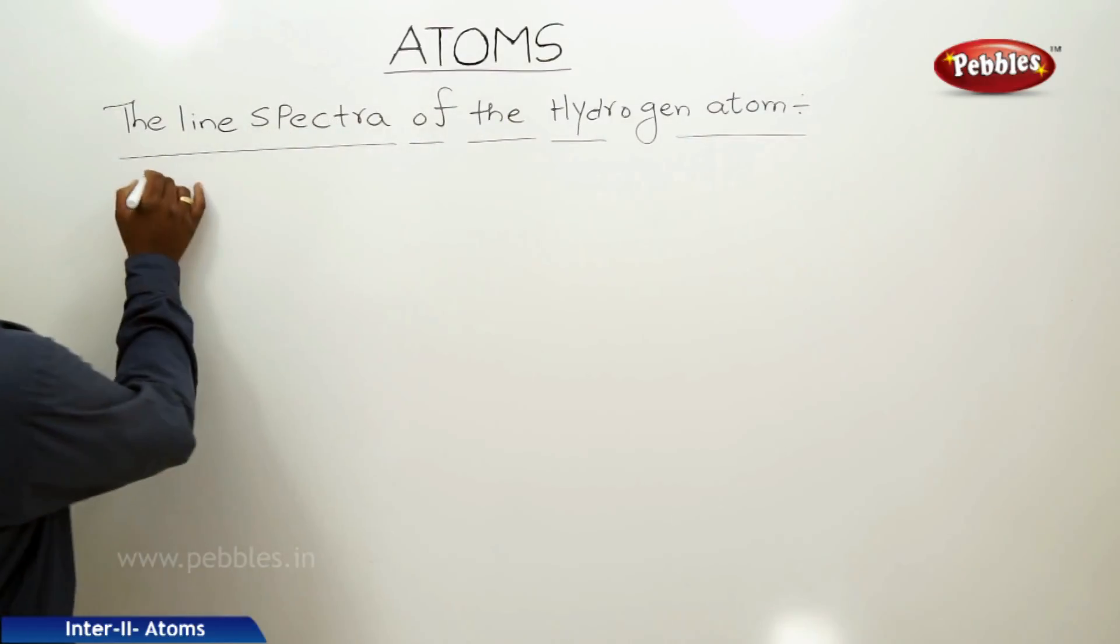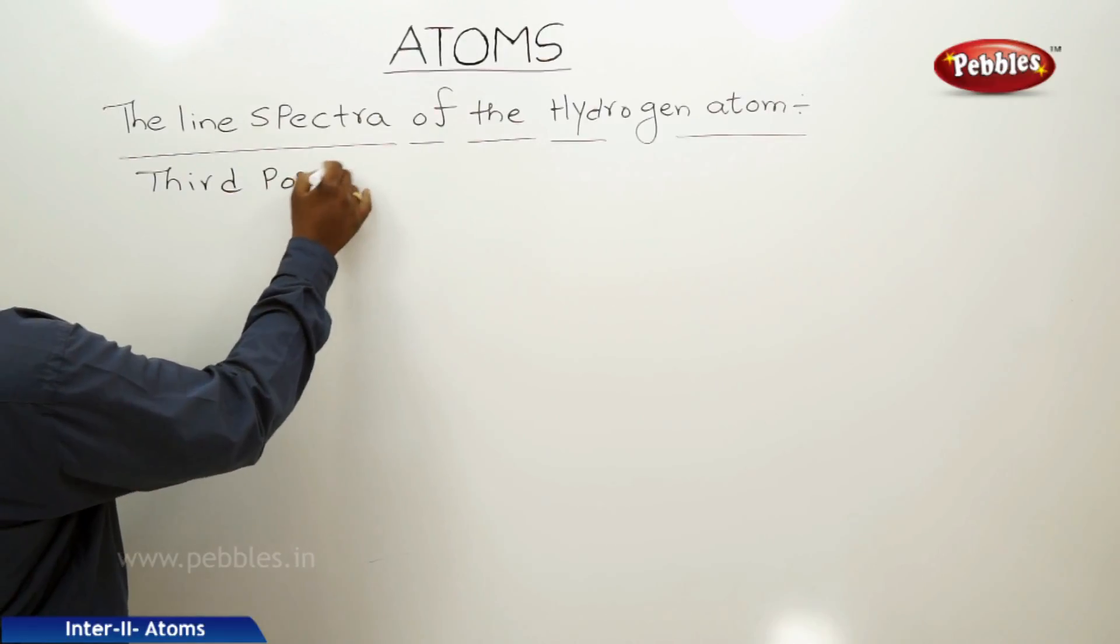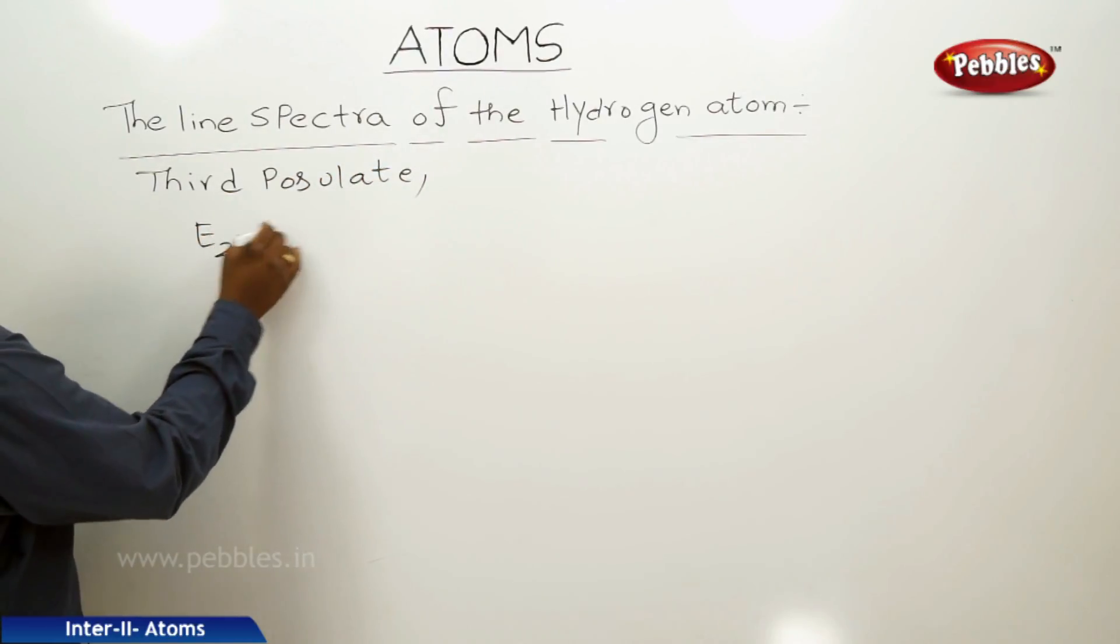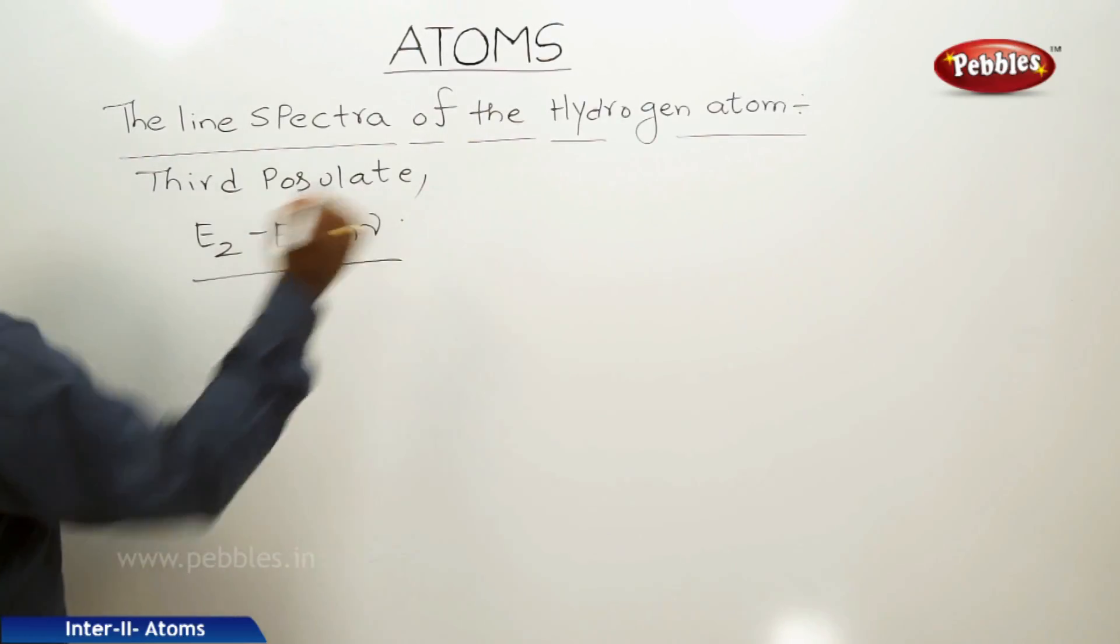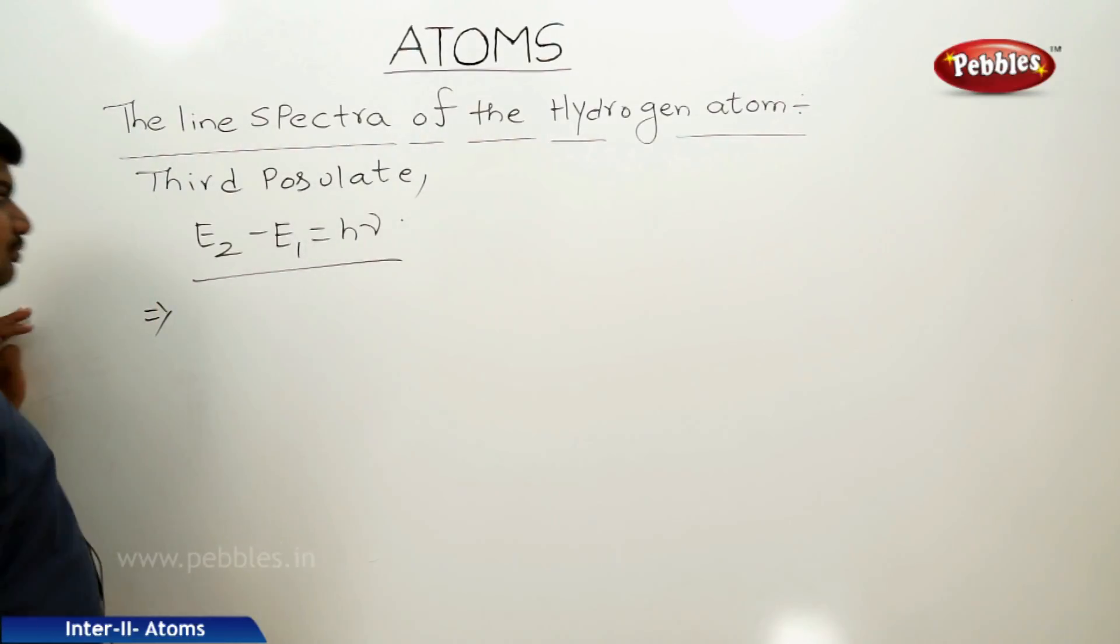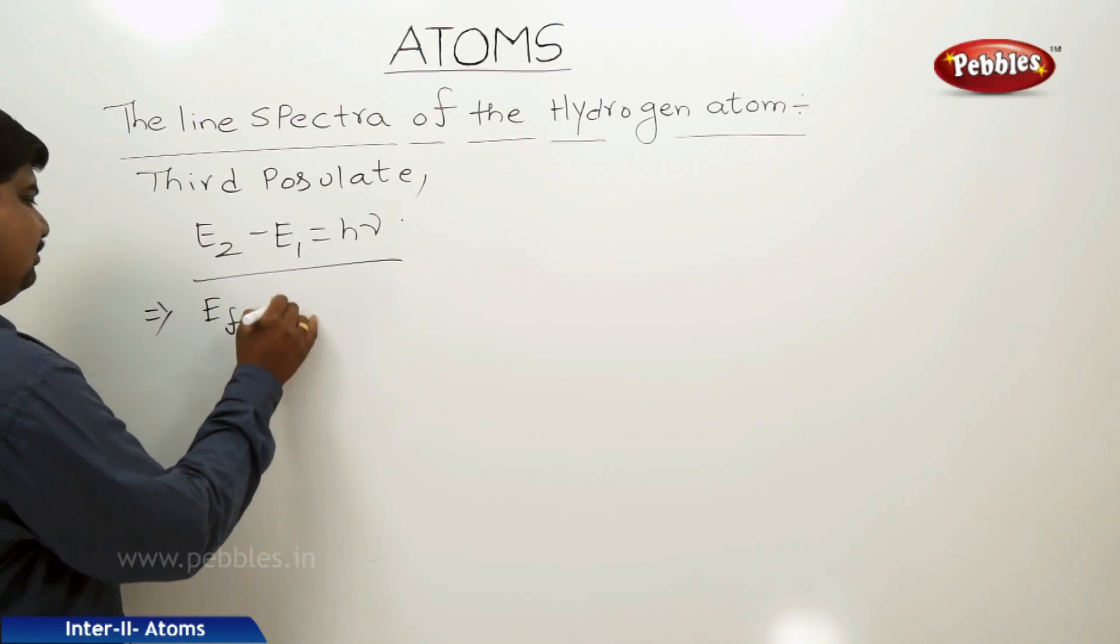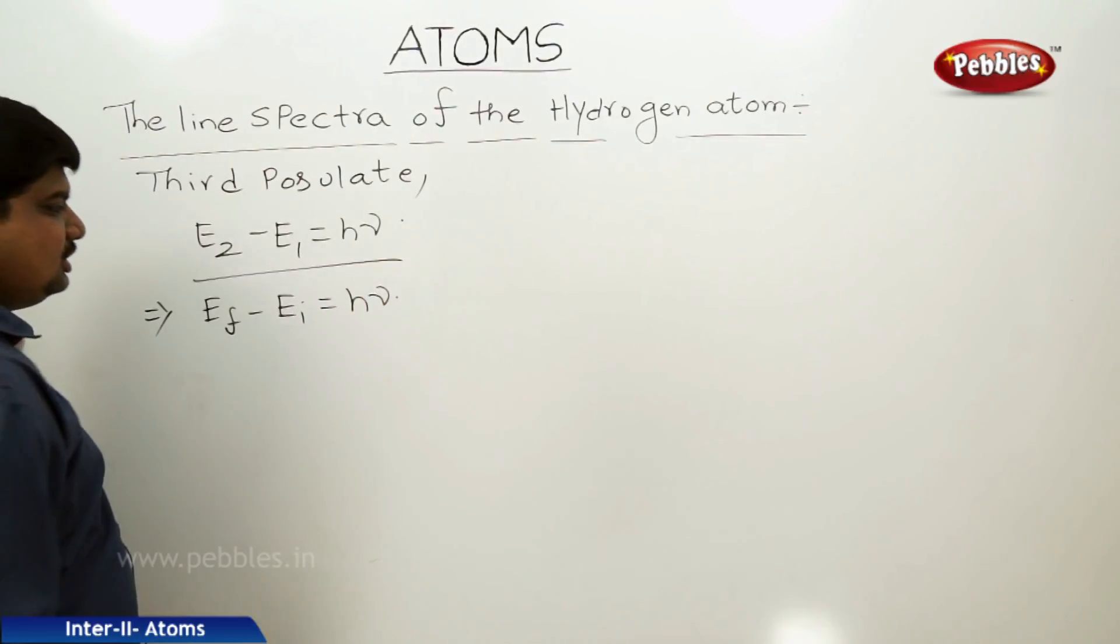according to the third postulate of Bohr, the energy difference is equal to h nu.